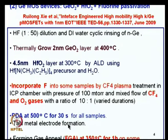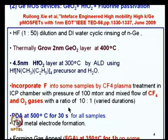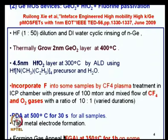Following the PDA, tantalum nitride metal electrode was formed for the gate. Finally, a forming gas anneal (FGA) at 350°C for 1 hour was done on some samples. Forming gas is a hydrogen-nitrogen combination. This resulted in double passivation: fluorine passivation from CF4 plasma and hydrogen passivation from forming gas annealing, in various combinations.